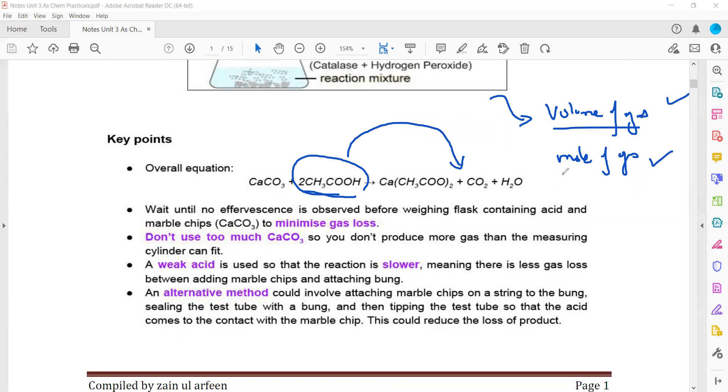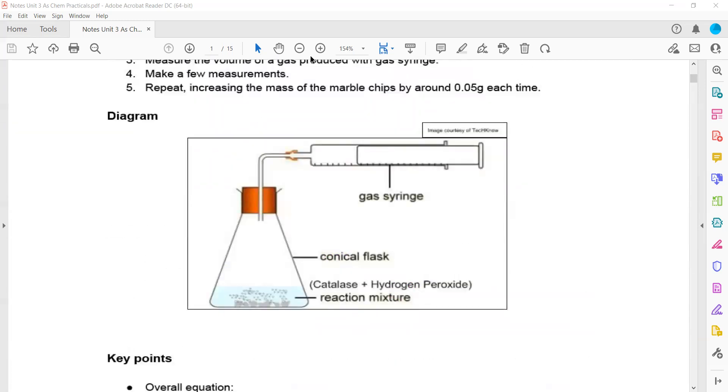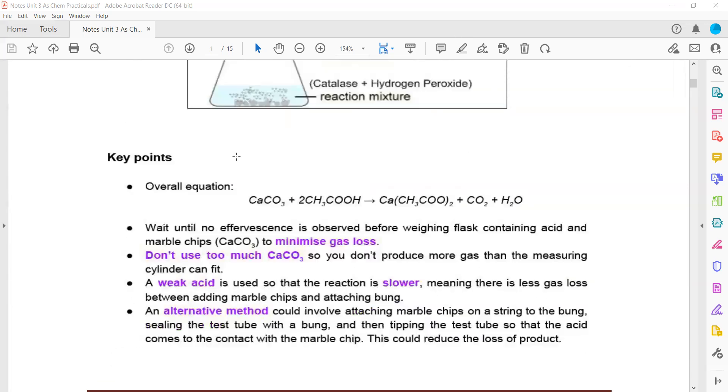Key points: Wait until no effervescence is observed before weighing. Don't use too much CaCO₃, because if too much gas is produced, it might exceed the maximum volume the gas syringe can measure, making the results inaccurate.